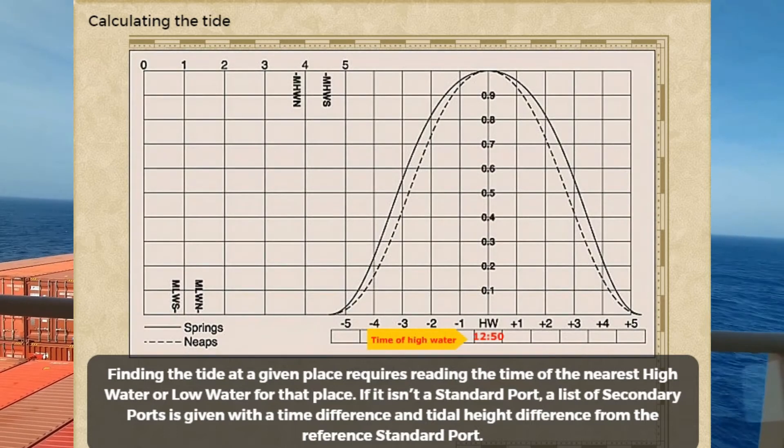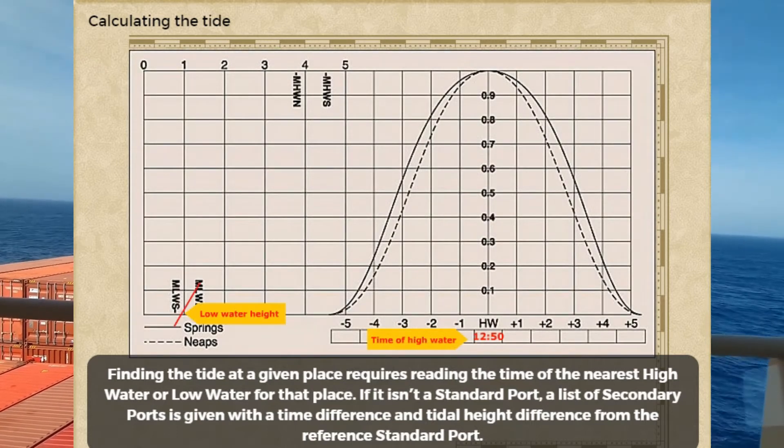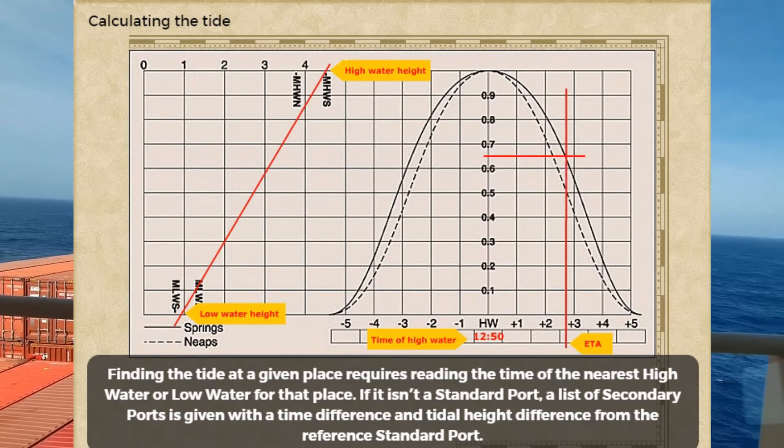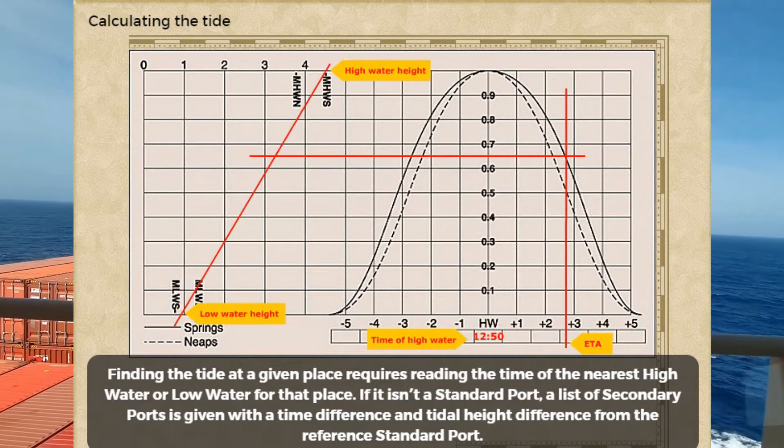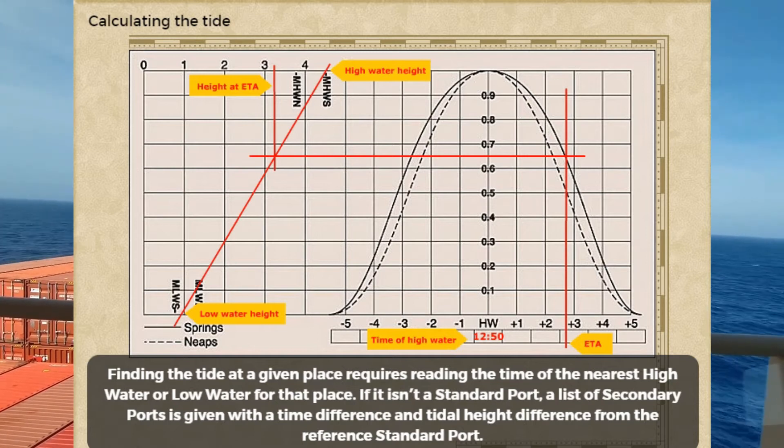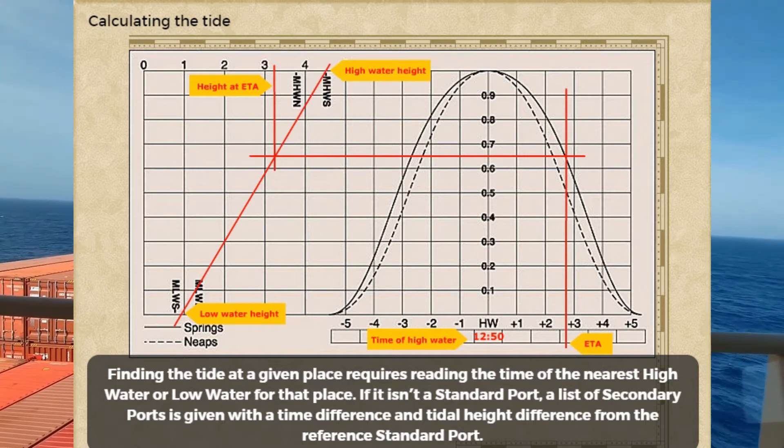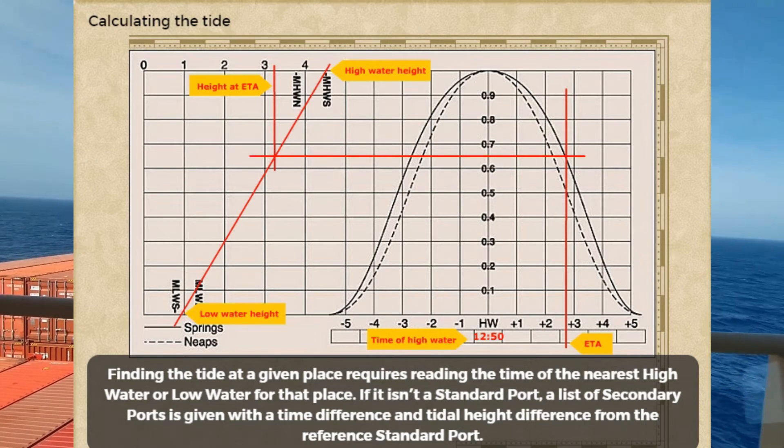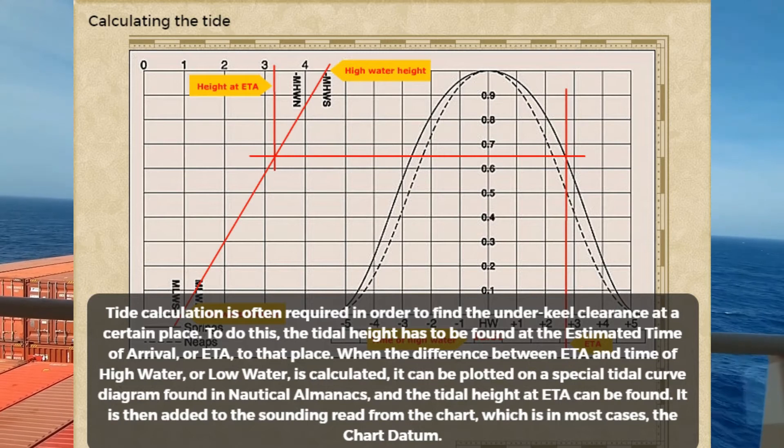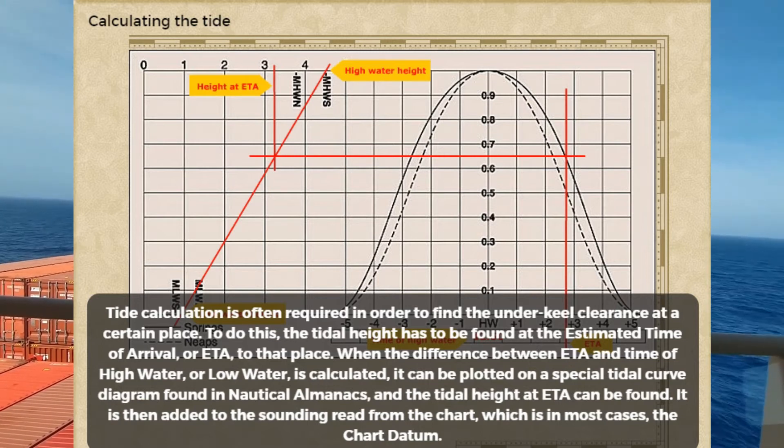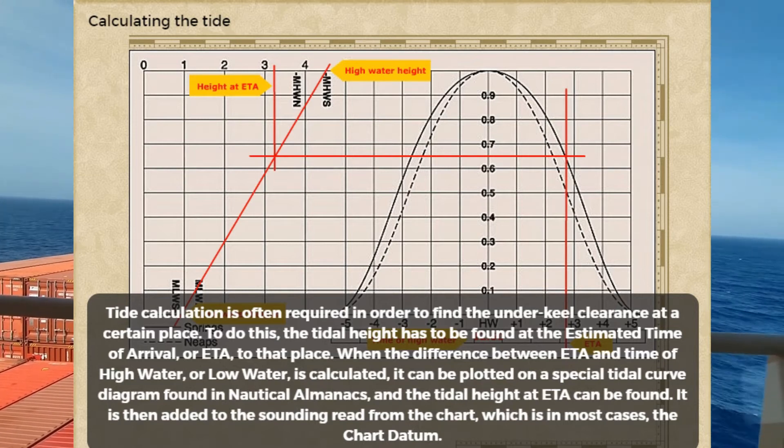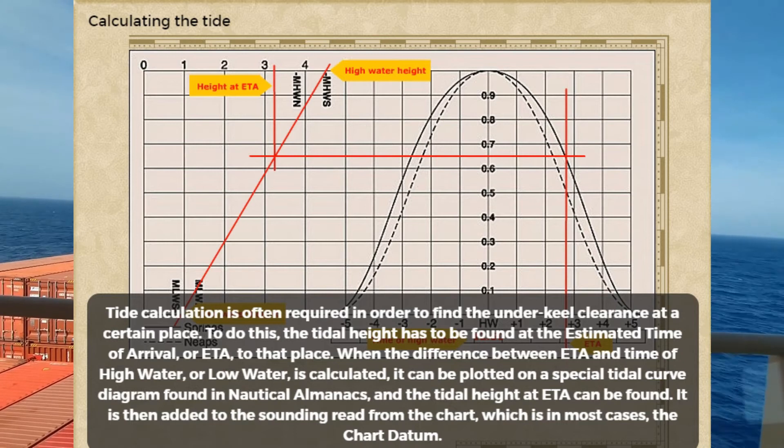Finding the tide at a given place requires reading the time of the nearest high water or low water for that place. If it isn't a standard port, a list of secondary ports is given with a time difference and tidal height difference from the reference standard port. Tide calculation is often required in order to find the under-keel clearance at a certain place. To do this, the tidal height has to be found at the estimated time of arrival to that place.